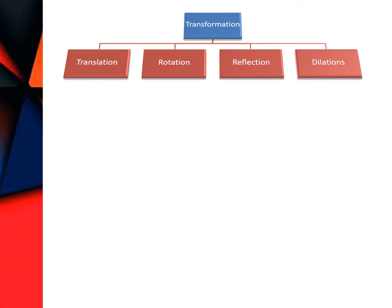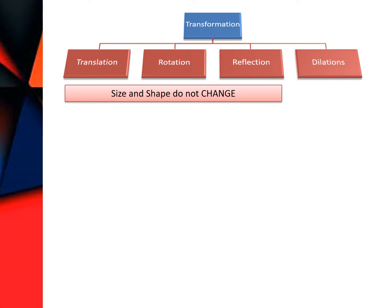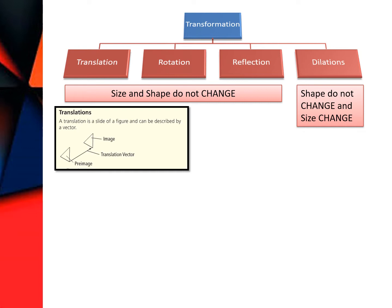In the last class we studied translation, reflection, and rotation. These are our transformations, and they are isometric transformations because the size and shape do not change. Dilation we will study in the next video — dilation is not an isometric transformation. In isometric transformation, the pre-image and the image are congruent figures.